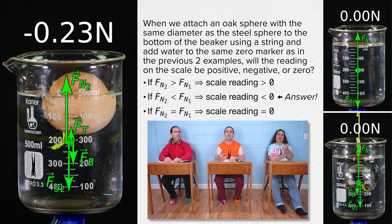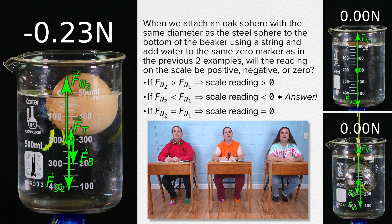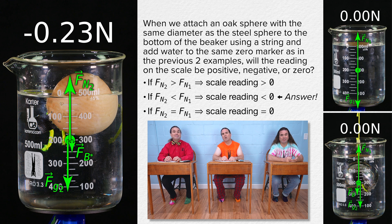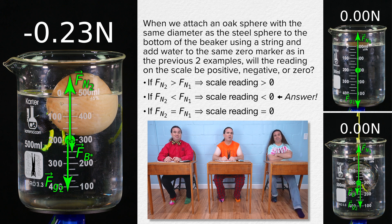Whoa — did you see that? The string detached from the bottom, and the reading on the scale is still the same: negative 0.23 newtons. How? The oak sphere is no longer submerged in the water and therefore displaces less water, so the downward buoyant force is less — let's give that an asterisk designation to indicate the buoyant force has changed. But the force of gravity is still force of gravity two because the amount of water remains the same, and there is no longer a force of tension acting on the beaker. That is why the force normal is still equal to force normal two. The force of tension is gone; however, the buoyant force is reduced by the magnitude of the force of tension.